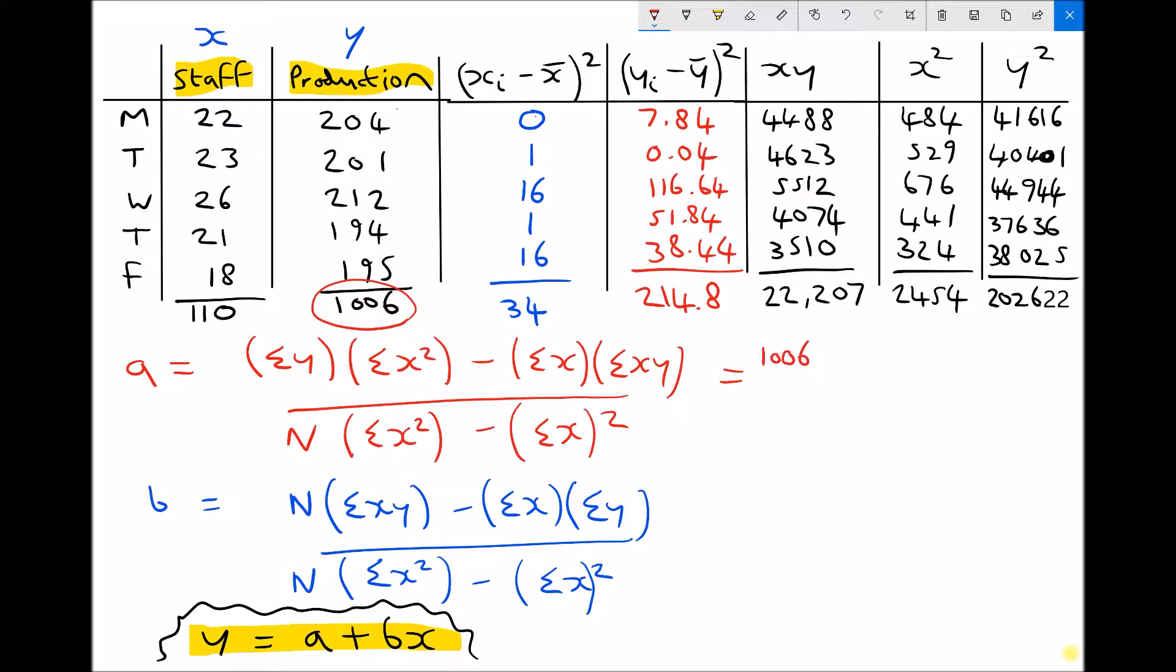The second term is the sum of the x squared values. In our second column from the right, we already have the x squared values, and this term is the sum of those values. At the bottom of the column, we see that value is 2454.